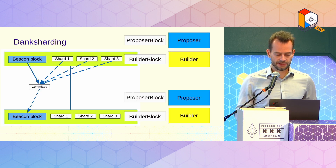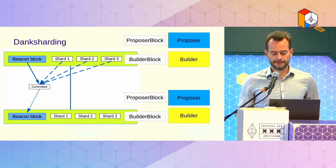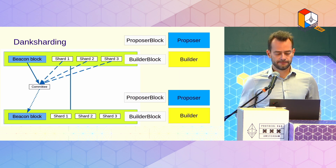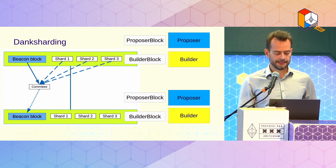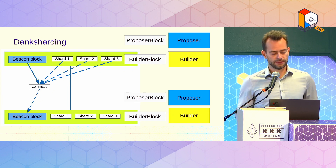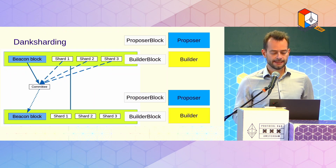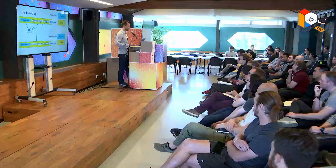This is an illustration of how proposer-builder separation would work. You have a proposer block which selects the beacon block, and that would be small. The actual main block with all the payload and the shard data would be created by a builder in a separate block.